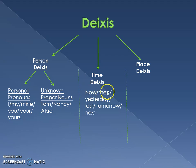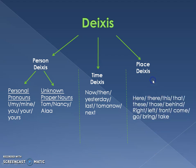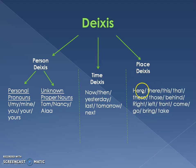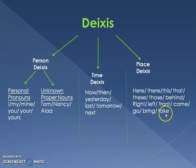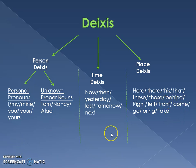Time deixis includes words like 'now,' 'then,' 'yesterday,' 'last,' 'tomorrow,' and 'next.' For place deixis we have: 'here,' 'there,' 'this,' 'that,' 'these,' 'those,' 'behind,' 'right,' 'left,' 'front,' and also verbs like 'come,' 'go,' 'bring,' and 'take' — so verbs can also be deictic expressions.